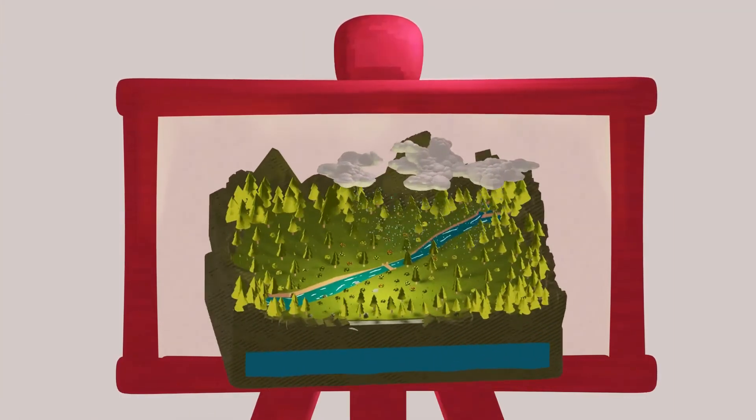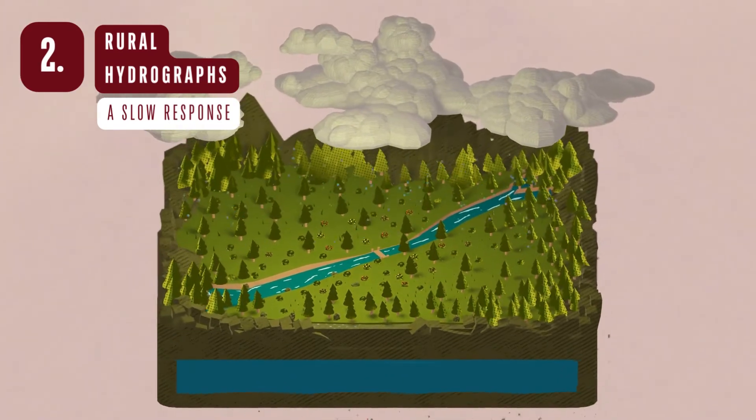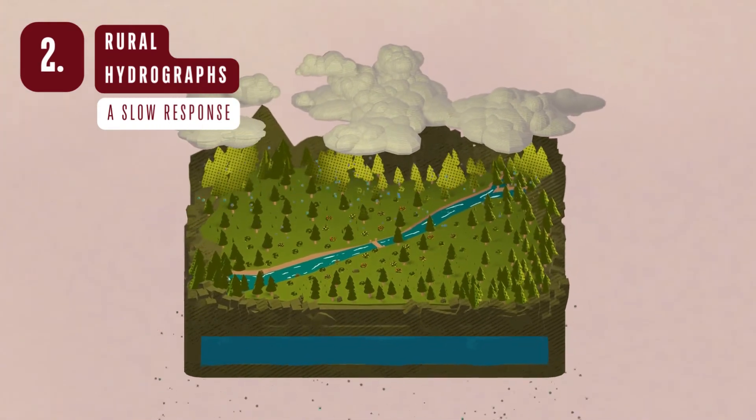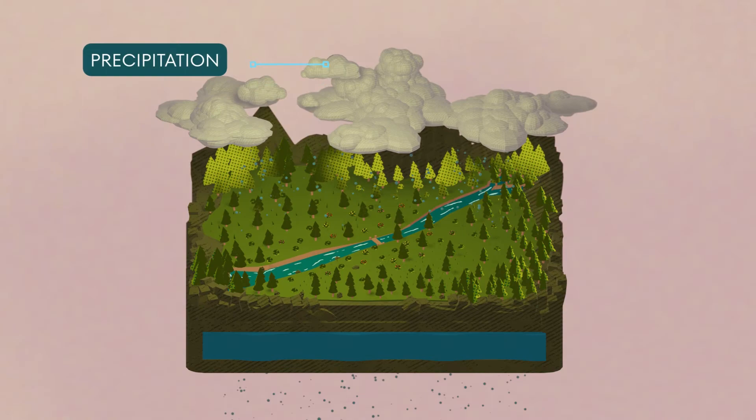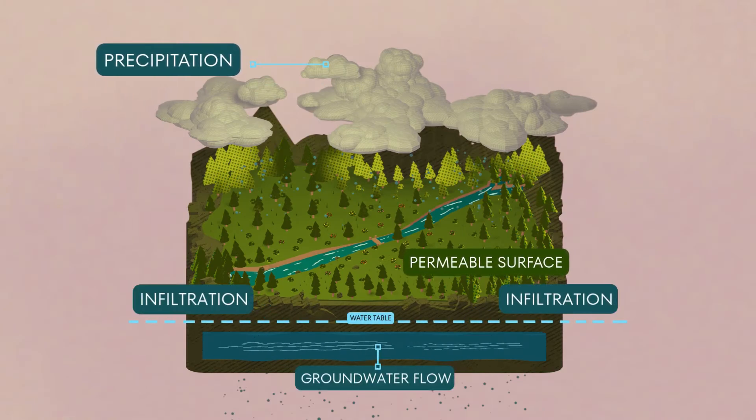In rural areas, think areas like forests, fields and farmlands, surfaces are permeable, which means water can infiltrate into the soil easily. This leads to more groundwater flow and less surface runoff.